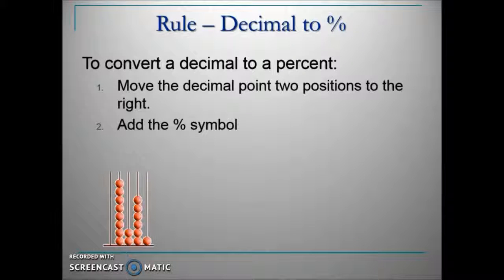When we're going from a decimal to a percent, it's just the reverse of what we've been doing. We will move the decimal point two positions to the right this time and add the percent symbol. In this example, we have 38 hundredths. We are going to move the decimal two places to the right and add the percent sign.